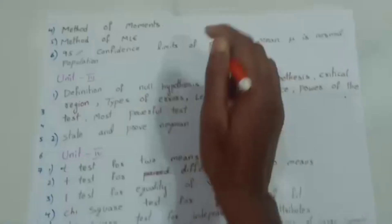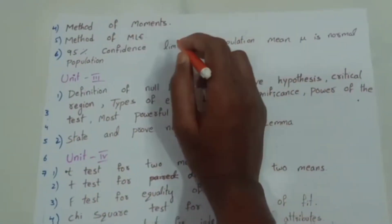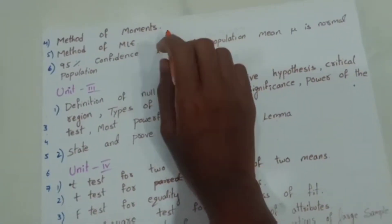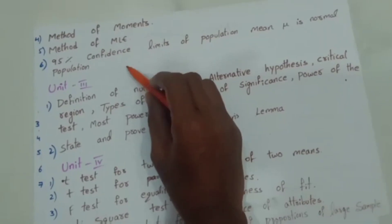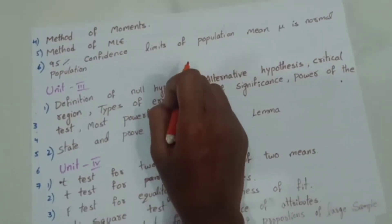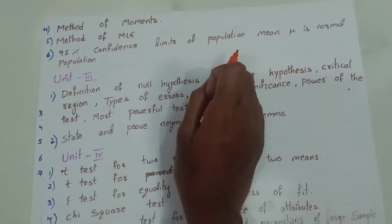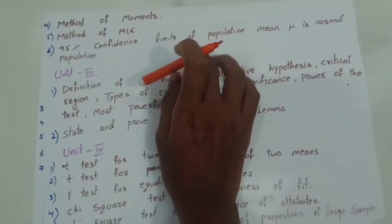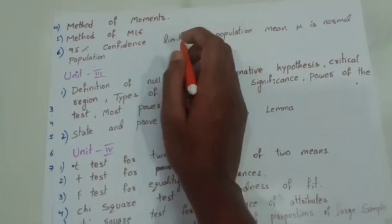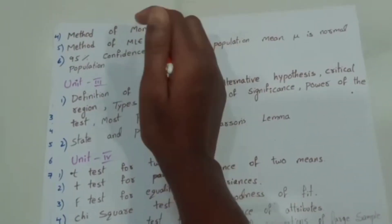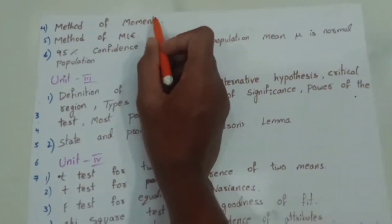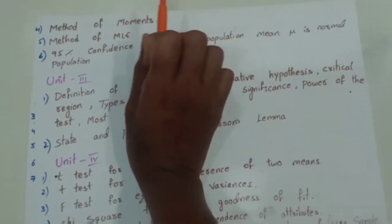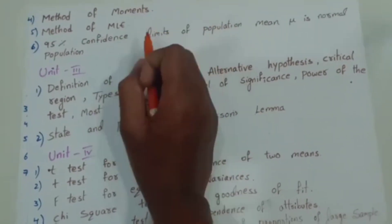Next, method of moments and method of MLE. And 95% confidence limit of population mean mu for a normal population. These 3 questions are very important. Method of moments and MLE are worth more than 10 marks, so we are going to prepare them.